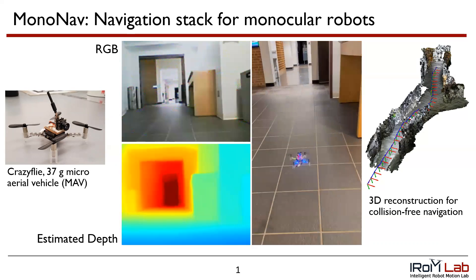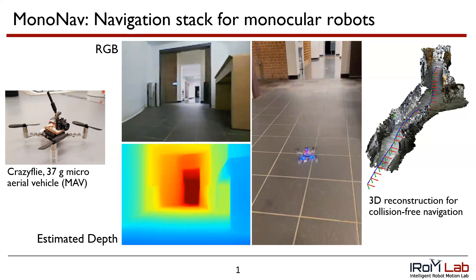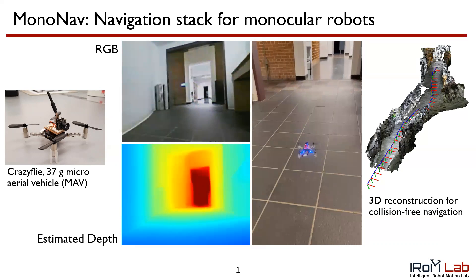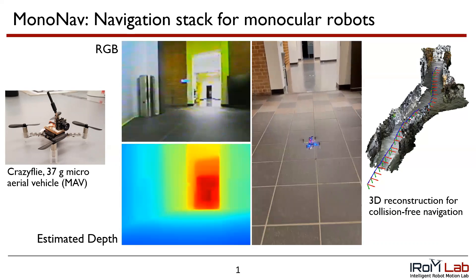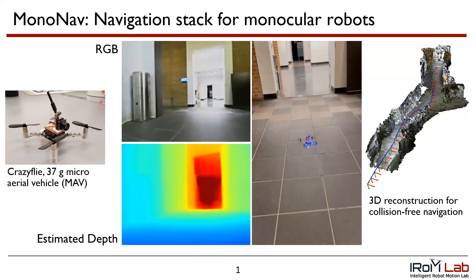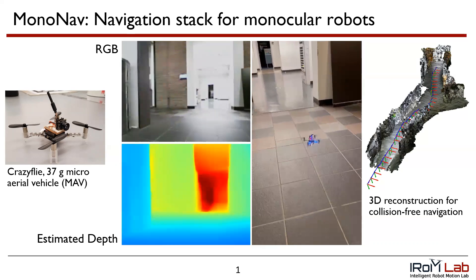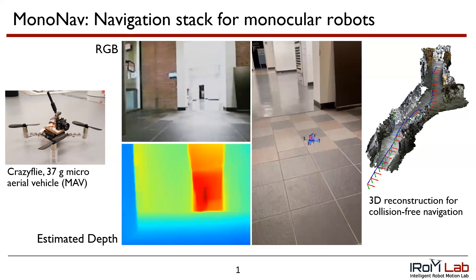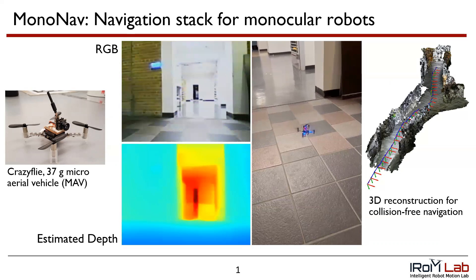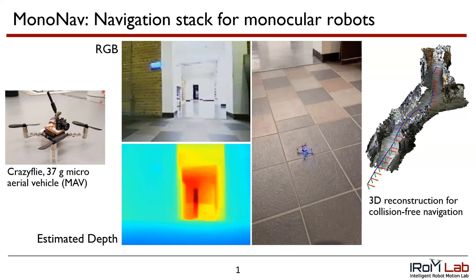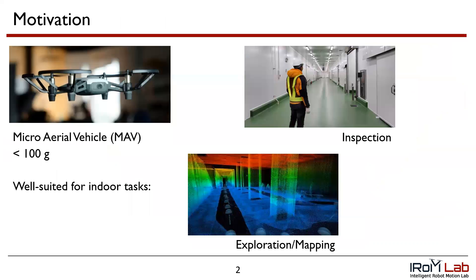All the videos of MonoNav are shown in real-time — nothing is sped up. The per-frame metric depth estimation enables online 3D reconstruction, giving the MAV a map for online path planning. To our knowledge, MonoNav is the first monocular navigation stack implementation with distinct mapping and planning stages evaluated in hardware. We test MonoNav in 15 different hallway environments, demonstrating its effectiveness in navigation.